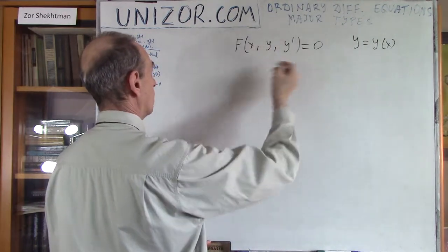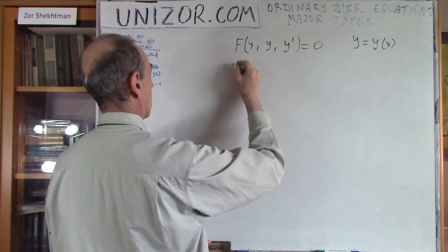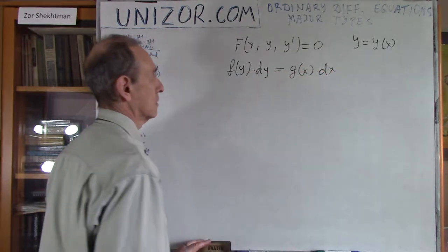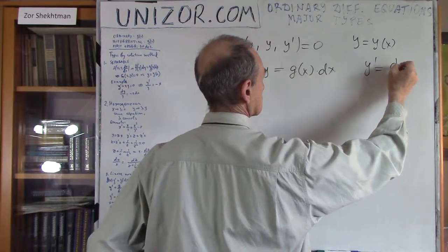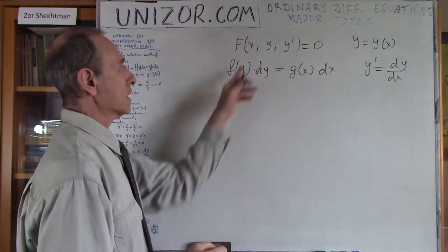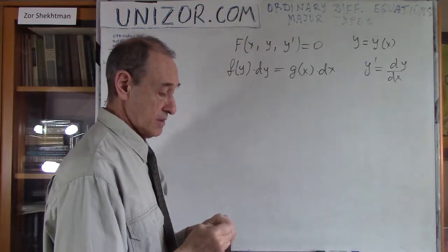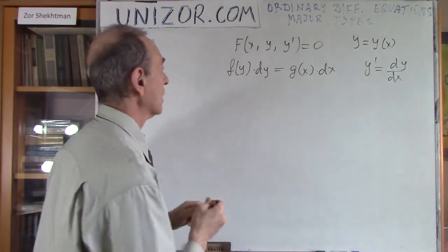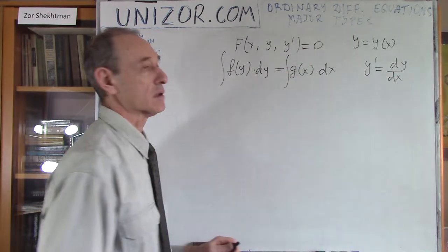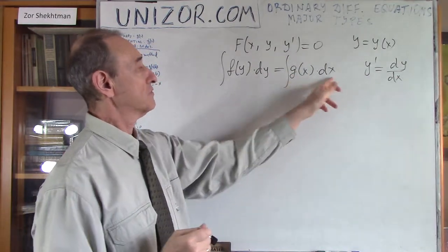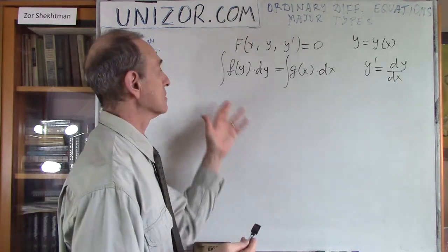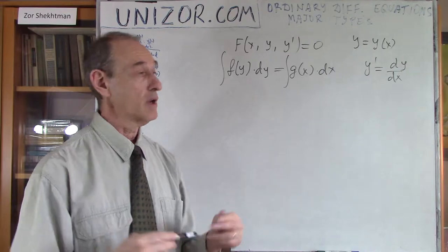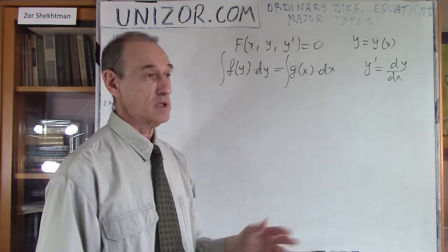This first type is probably the easiest — equations where we can separate variables. If the equation can be represented as f(y) dy equals g(x) dx, where y' is dy/dx, then we can talk about separation of arguments: y is on the left, x is on the right. We can then apply indefinite integrals to both sides. Since these are two infinitesimals that are equal in the sense that their difference is an infinitesimal of a higher order, we can integrate them and obtain the equality.